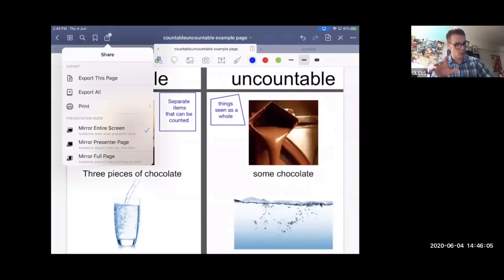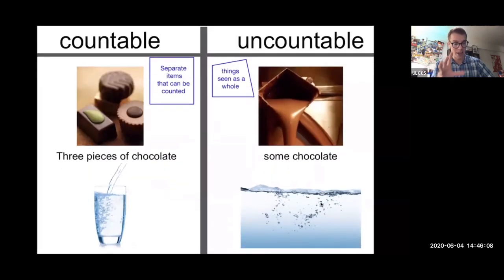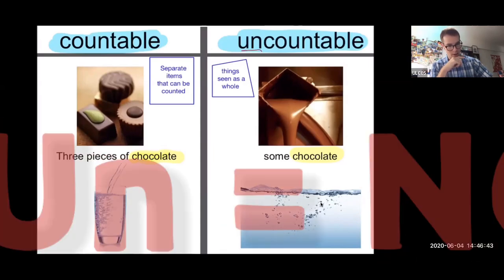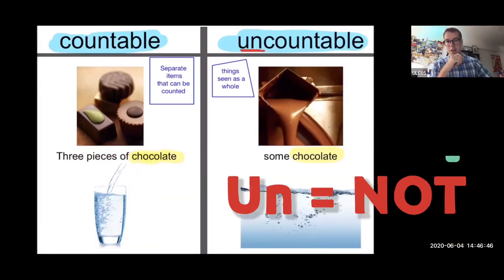Whenever we have English nouns, things like the word chocolate - chocolate's a noun, it's a thing - I need to know, to use the correct grammar, whether it can be counted or whether it can't be counted. So this is where I have these two words: countable and uncountable. If you see 'un' in English, just remember 'un' means not. Happy, unhappy - not happy.